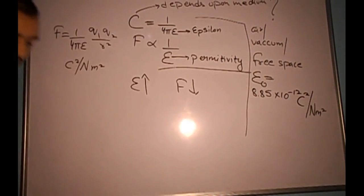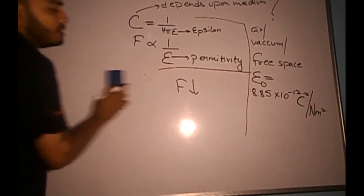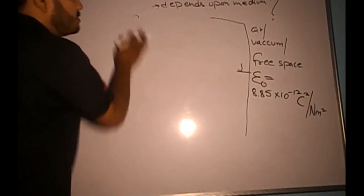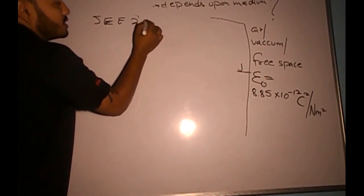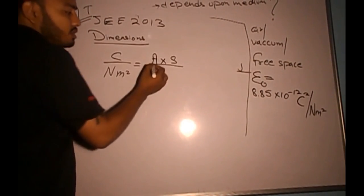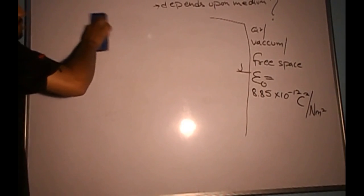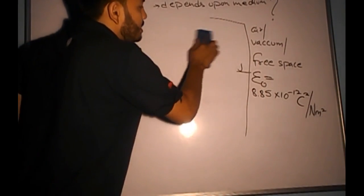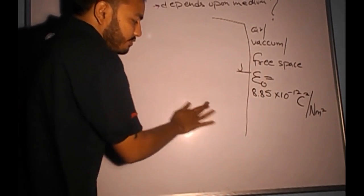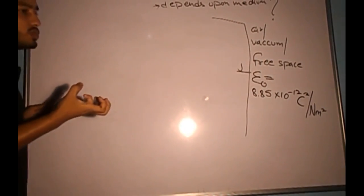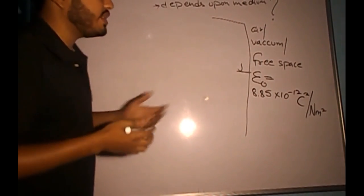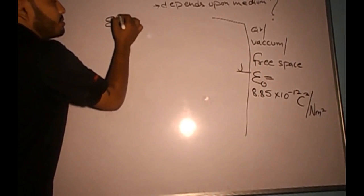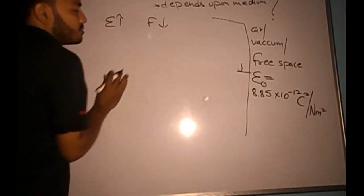In IIT JEE 2013, it was asked: what is the dimension of permittivity? We can work it out from the formula. Permittivity tells how much the force decreases — or how much the force between two charges is affected due to the presence of a medium. Higher the value of permittivity, lower is the force.